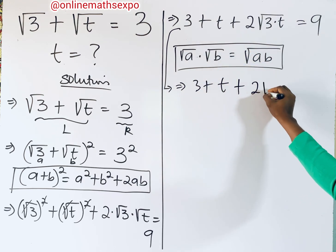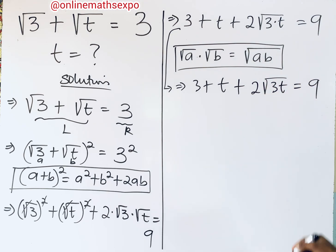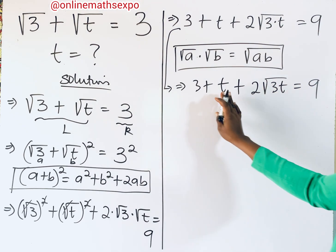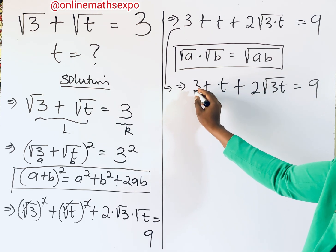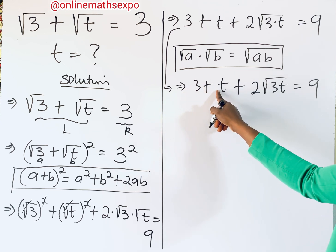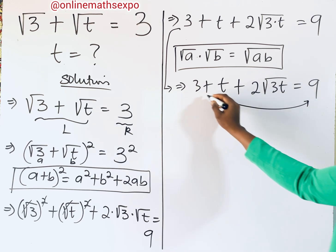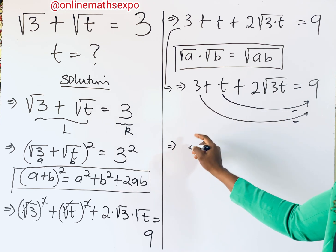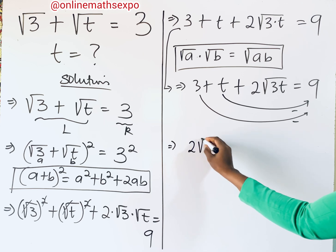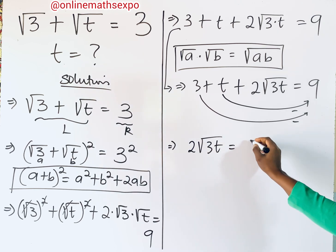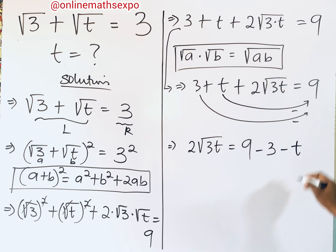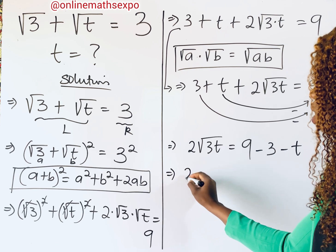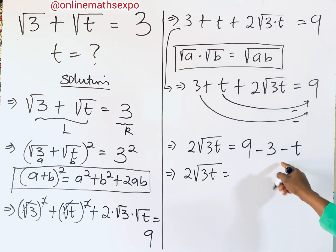From here we have 3 + t + 2√(3t) = 9. We move the 3 and t to the other side by subtracting, so we are left with 2√(3t) = 9 − 3 − t, which gives us 2√(3t) = 6 − t.